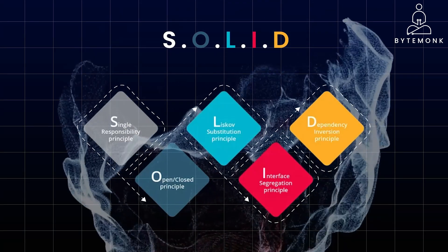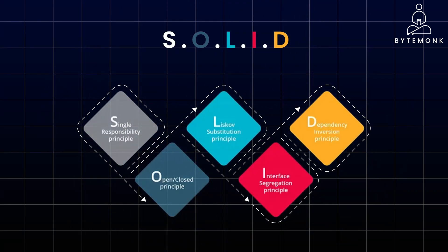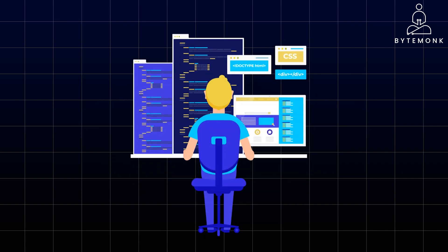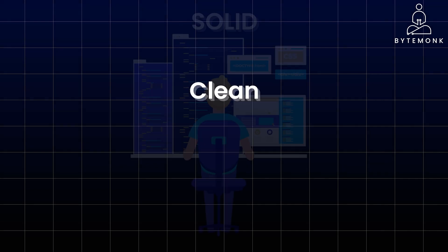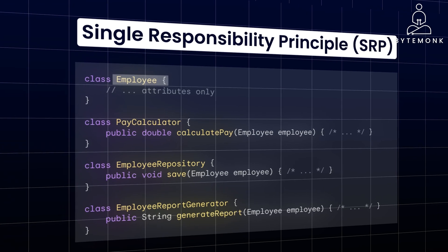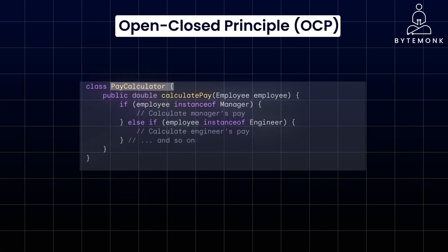But understanding SOLID principles isn't just about passing coding interviews, it's about becoming a better software developer. In this video, we'll delve into the SOLID principles, a set of five design principles that serve as guidelines for writing clean, maintainable, and scalable object-oriented code. We'll explore each principle in detail, illustrating its concepts with practical and simple Java examples. By the end of this video, you will have a solid understanding of all five principles. So let's get started.